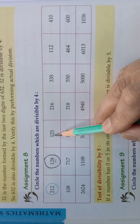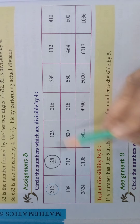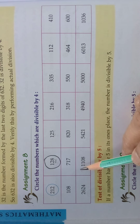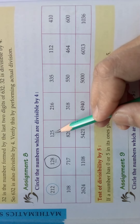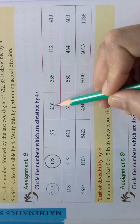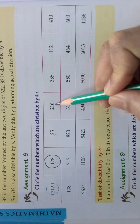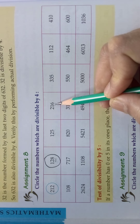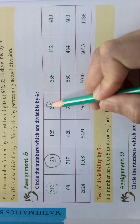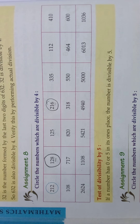Next number: 125. Last 2 digits: 25. Is 25 in the 4 table? No. So it is not divisible by 4. Next: 216 — take the last 2 digits: 16. Yes, it is in the 4 table — 4 fours are 16. So this number is divisible by 4.